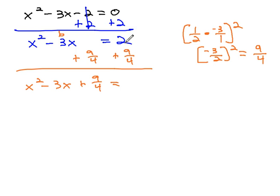Right now, that's 2 over 1. Common denominator of 4, multiplying by 4 over 4 gives us 8 fourths plus 9 fourths is 17 fourths.